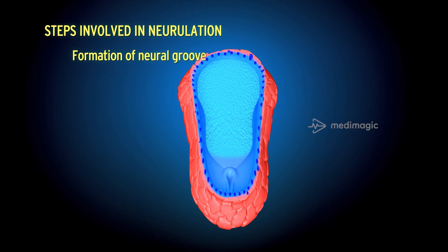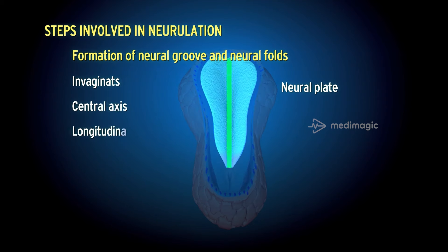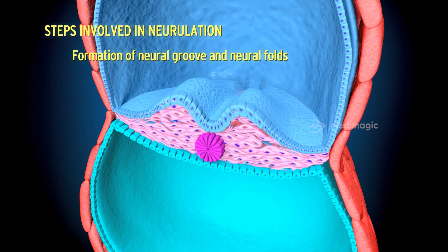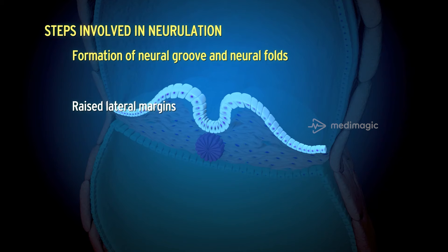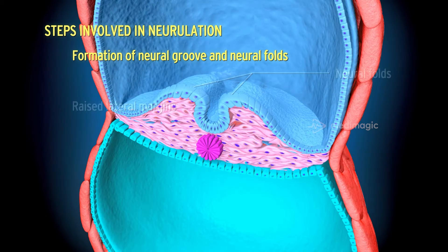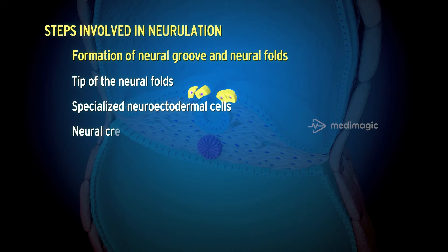Formation of Neural Groove and Neural Folds. The neural plate invaginates along the central axis to form a longitudinal median groove, known as the neural groove. Each of the lateral sides of the neural groove has raised lateral margins called the neural folds, which are prominent at the cranial end of the embryo. The tips of the neural folds are lined by specialized neuroectodermal cells known as the neural crest cells.